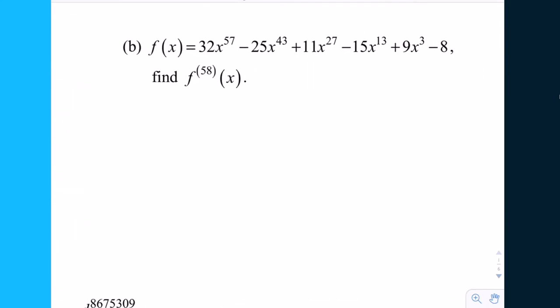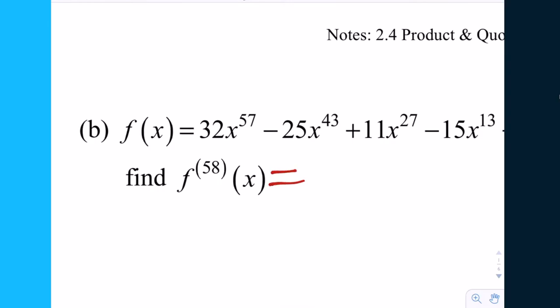Let's look at example B. We have f of x equals 32x to the 57th power minus 25x to the 45th plus 11x to the 27th minus 15x to the 13th plus 9x cubed minus 8. That's a big polynomial. It tells us to find the 58th derivative. Now normally it's a recursive process. There's got to be a better way. If the derivative number is any number larger than the power of the exponent on the polynomial, then we've hit zero. So in this case, what should the answer be? Zero.